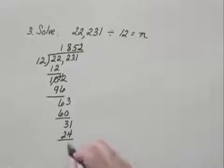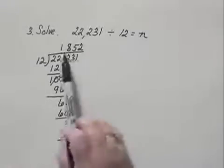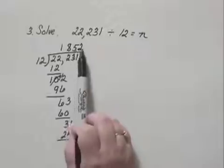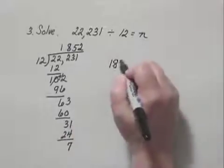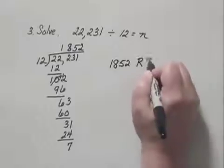We subtract, and we are left with 7. 7 is less than 12, so we are finished, and 7 would be the remainder. So we would have N being 1,852, remainder 7.